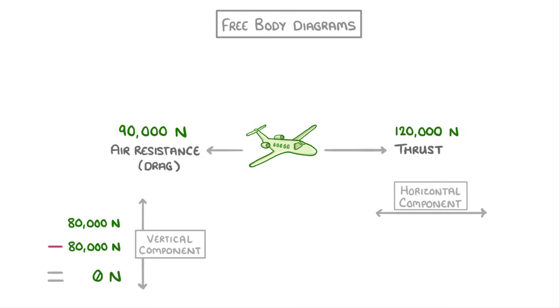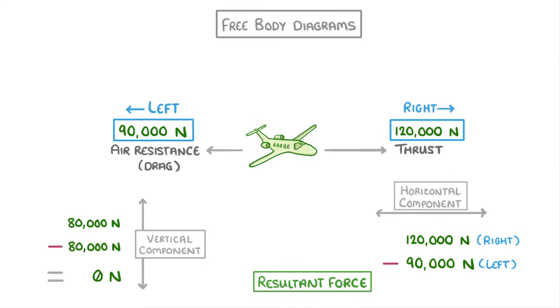For the horizontal component though, we have 120,000 newtons to the right and only 90,000 newtons to the left. So by doing right minus left, we get a resultant force of 30,000 newtons in the right direction.